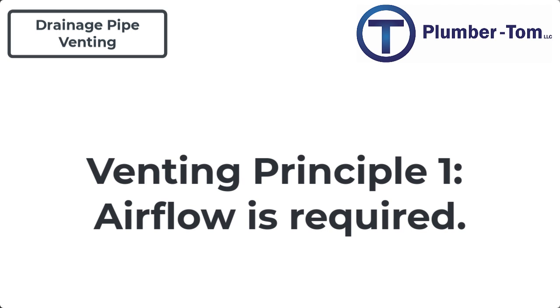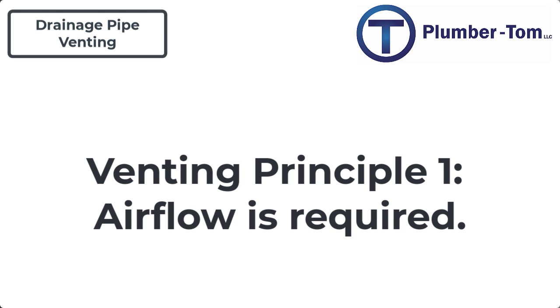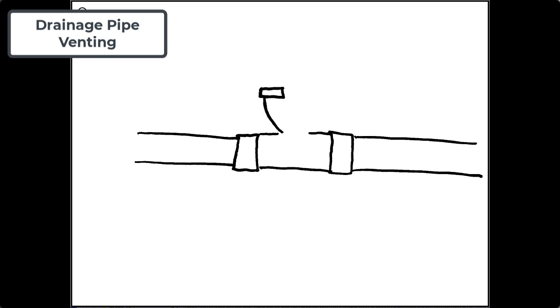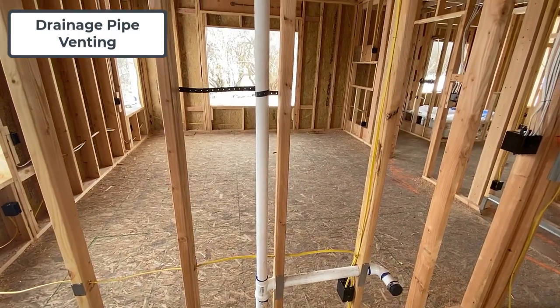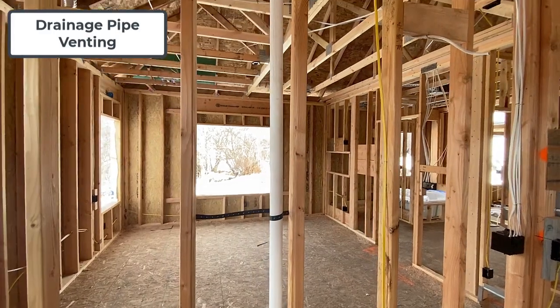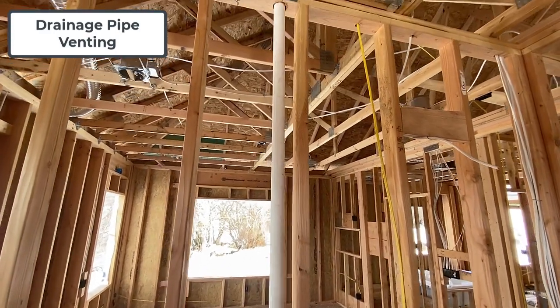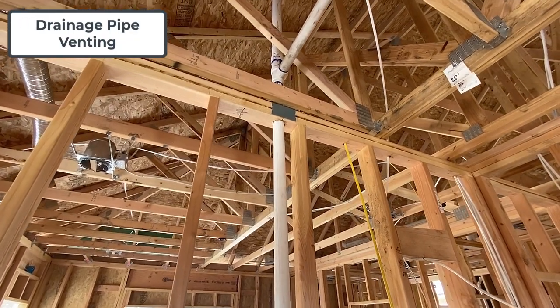This brings us to the first fundamental principle of venting. Fundamental principle one: air flow is required for a drain to work properly. As fluids move through the pipe, air is displaced. If there's no air for that air to go, it builds up pressure which can slow down or even stop the flow of fluids. On the other hand, movement of fluids can cause a vacuum of air in other parts of the drainage system, which can slow or even stop the flow of fluids. So adequate connection to open air is absolutely necessary in order for drainage waste to flow. This principle will be emphasized throughout this training.